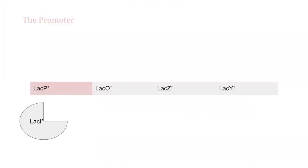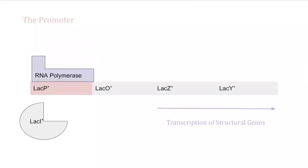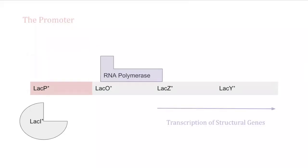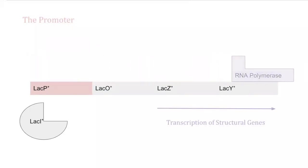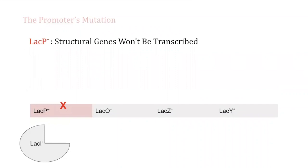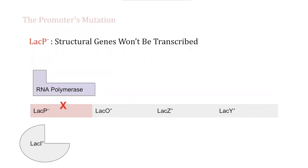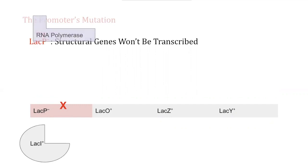Now let's move on to the promoter. The promoter is where RNA polymerase binds so that it can transcribe the structural genes. This is a mutated promoter, lacP negative. The lacP negative mutation means that RNA polymerase will never be able to bind to the promoter, and if RNA polymerase can't bind to the promoter, then it can't transcribe the structural genes.